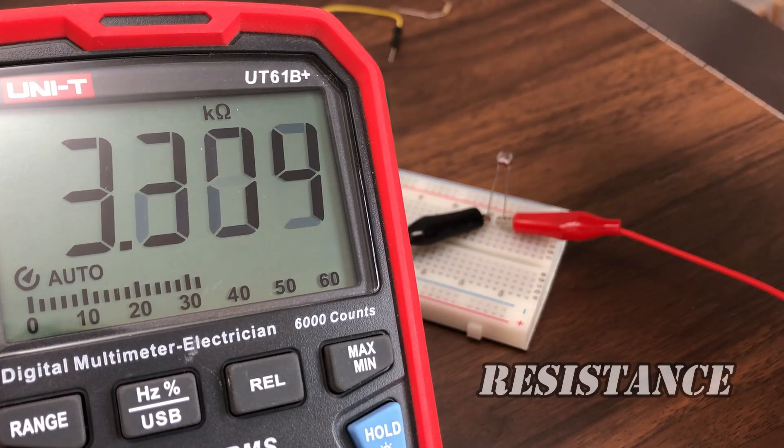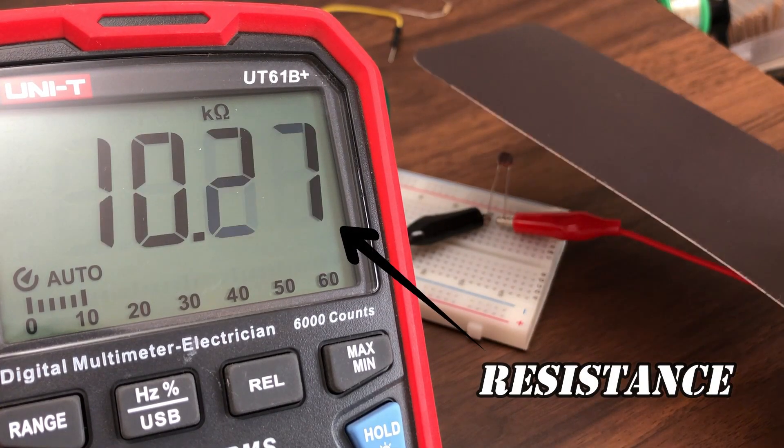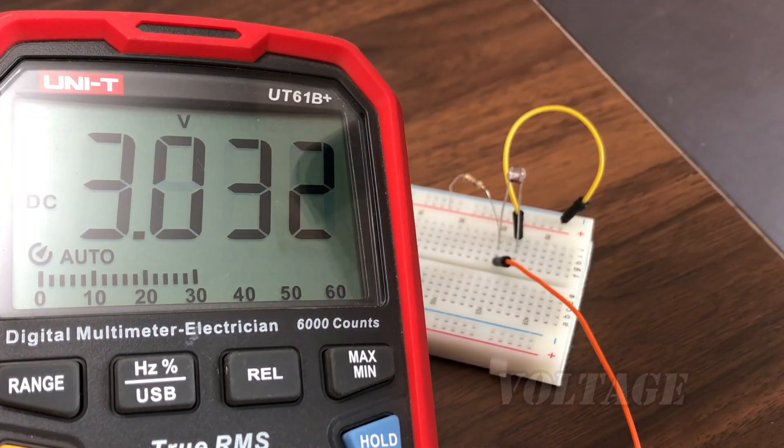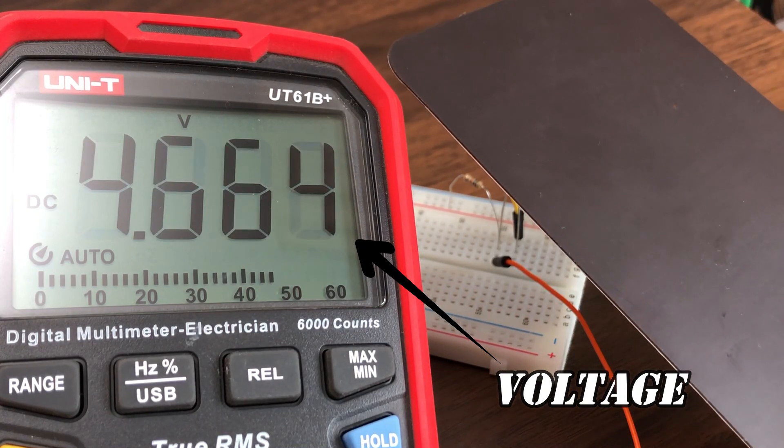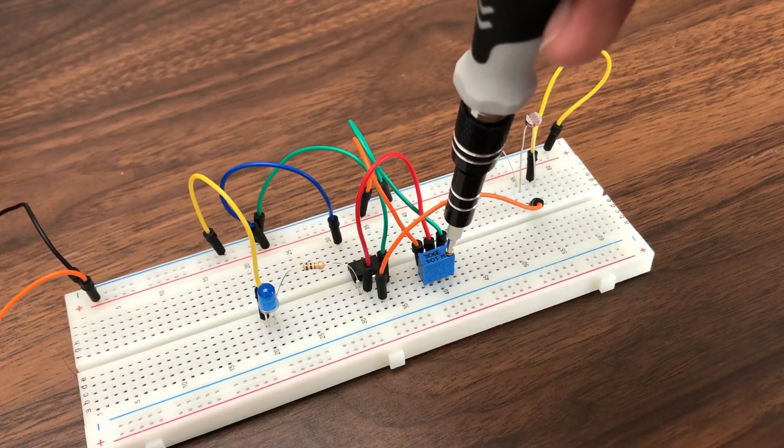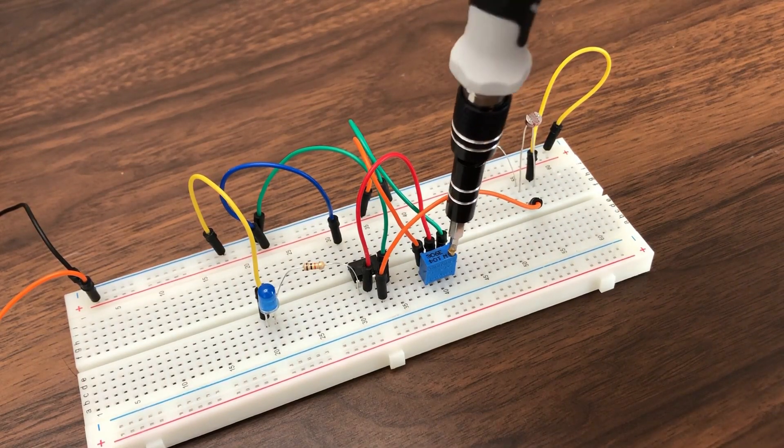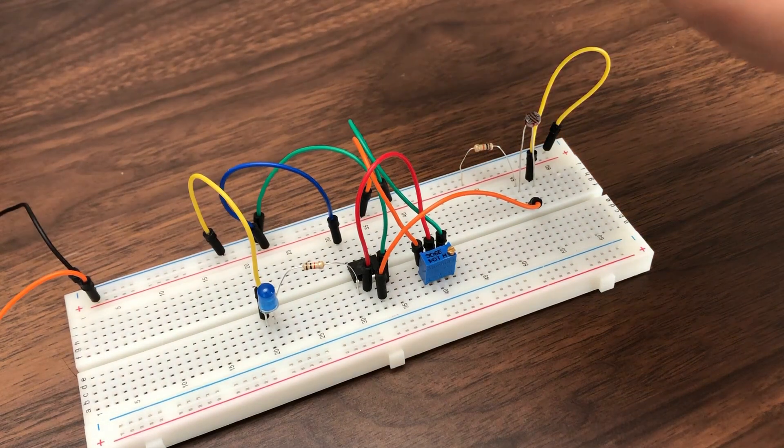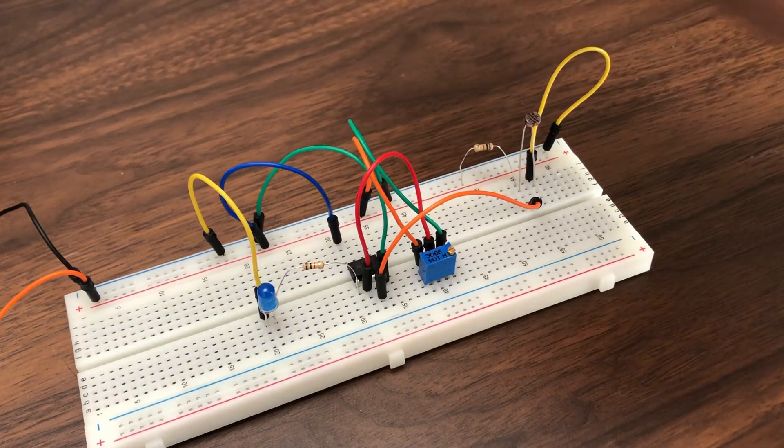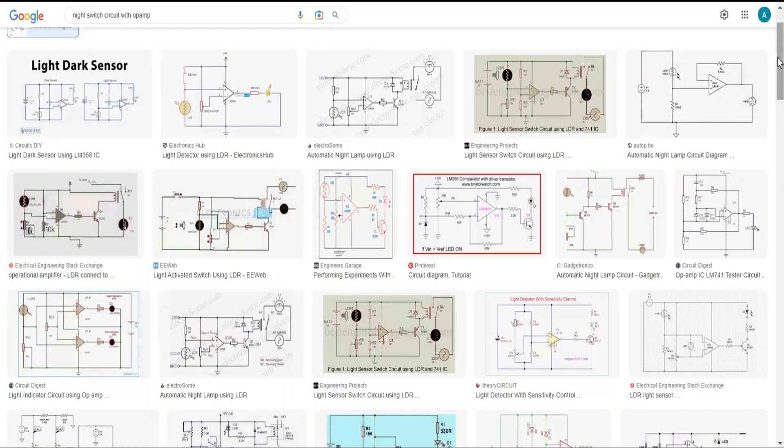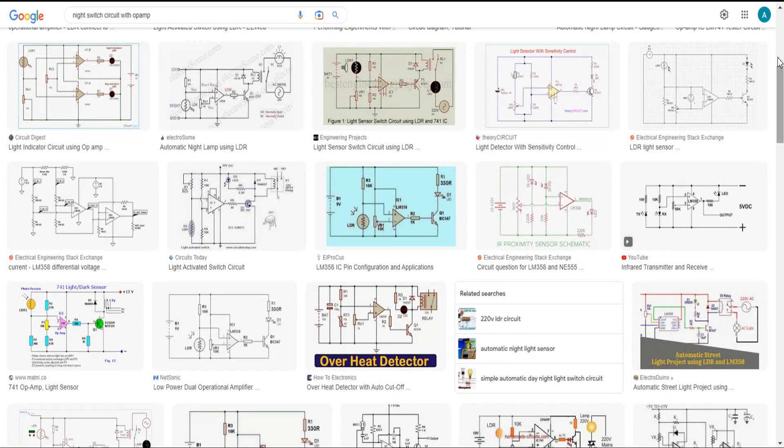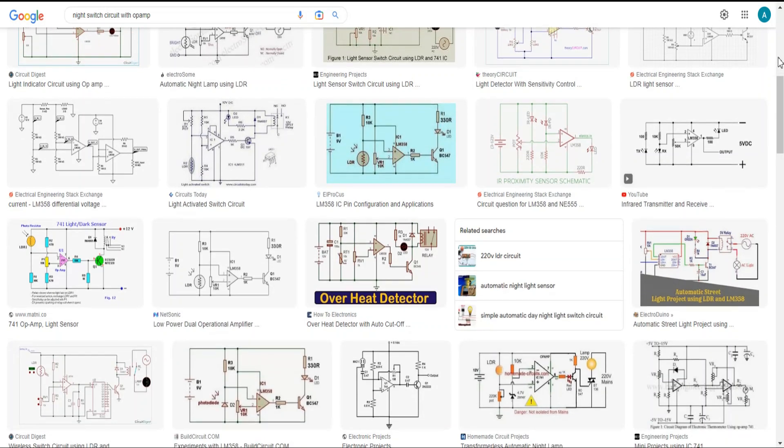The sensor is basically varying its resistance based on the intensity of light. So by creating a resistor-divider circuit, we can convert the change of resistance into varying voltage. This voltage now acts as an input for the comparator, and I can change the reference by that potentiometer. The reference now decides the intensity at which the LED turns on and off. You will get lots of images of the circuit on Google if you search night switch circuit with op-amp. But hold on, there is a massive problem with all these circuits.